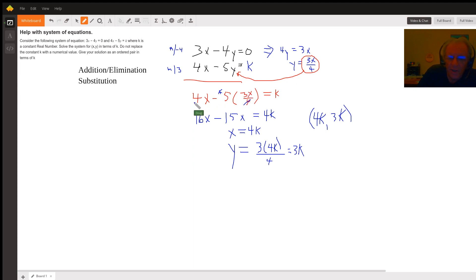You end up with 4x - 5(3x/4) = k. What's the easiest way to solve for x? In my opinion, probably the best strategy is to clear the equation of fractions.